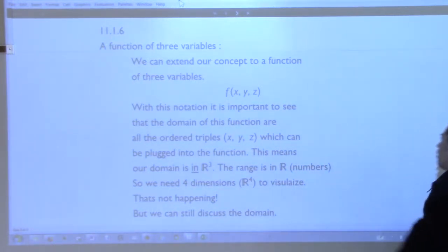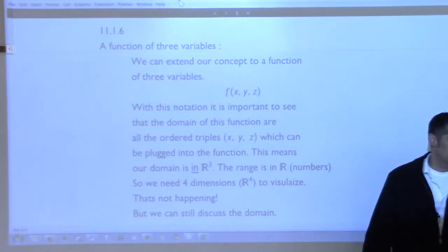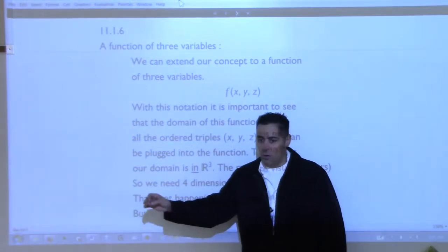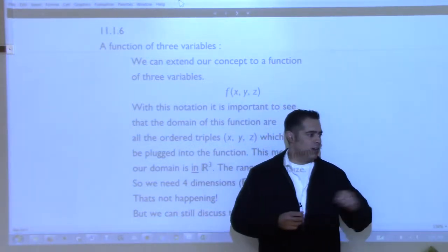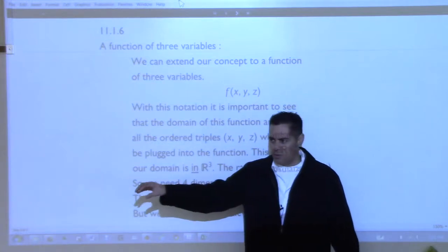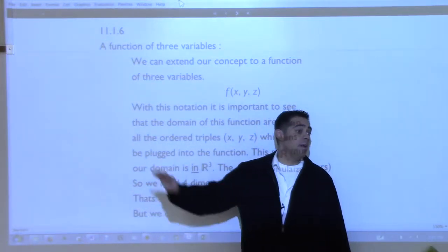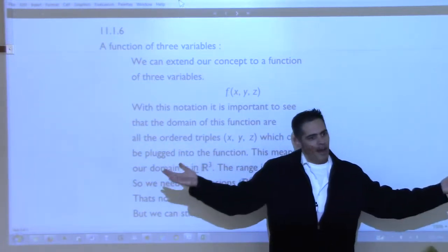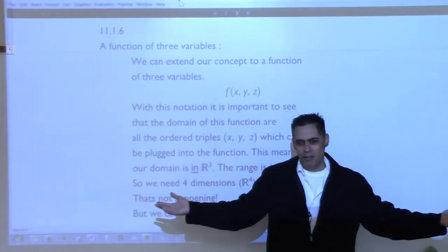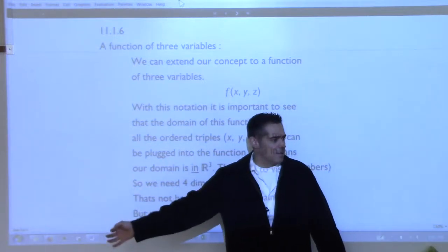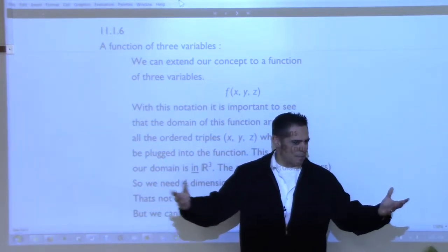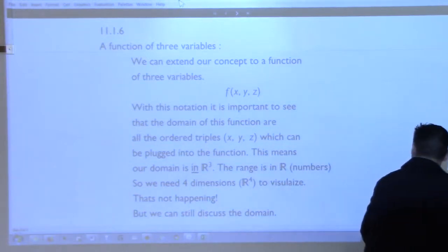Now we're going to say: if you can have a function of two variables, why can't you have a function of three? Instead of plugging in an ordered pair and getting out a number, how about plugging in an ordered triple — a point in three-dimensional space — and getting a number out? Why not? Or what about a point in four-dimensional space getting a number out?